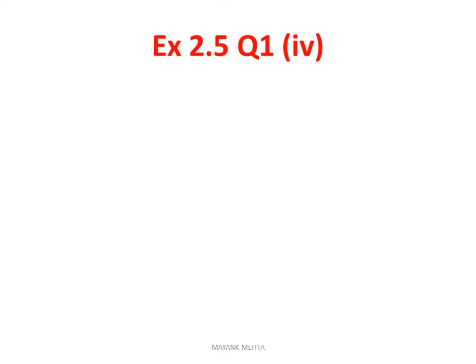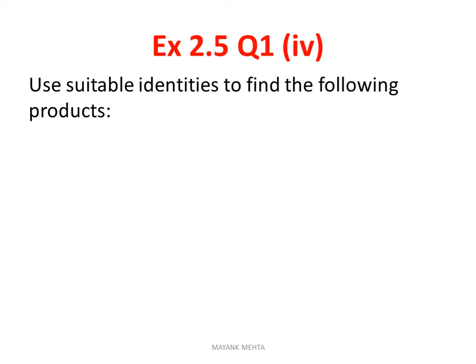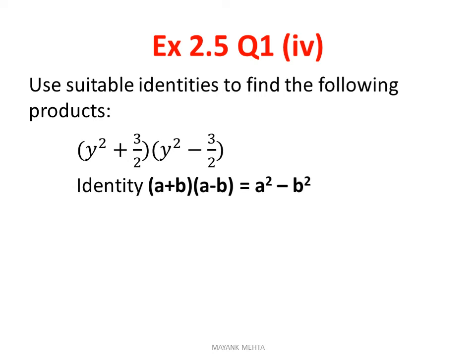Now, question 1 part 4. Here again the question is same. You will need to find the product by suitable identity and here it is given (y² + 3/2)(y² - 3/2). We will use the identity (a+b)(a-b). The product will be a² - b². That is (y²)² minus (3/2)². It will become y⁴ - 9/4. Don't make mistake in the sign. There is a minus sign in between.